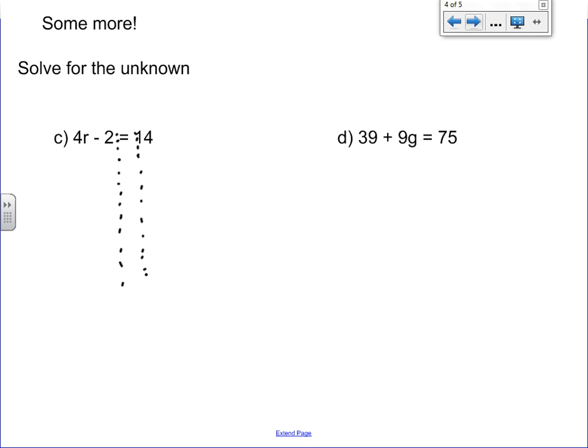So in the first example here we're looking to get the r by itself. To do that, the 4 is kind of really close to it, the 2 is a whole number. What we can actually do is we can move that to the other side of the equation. So to do that, right now we have 4r minus 2.